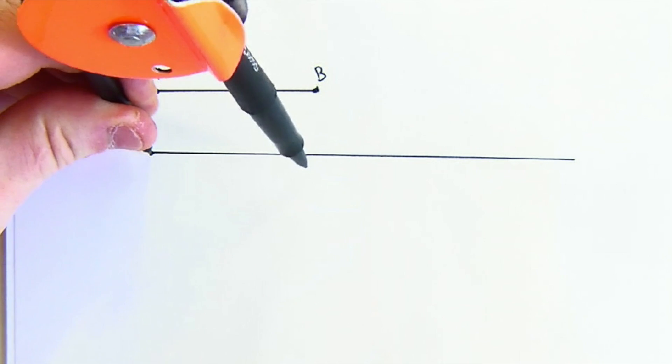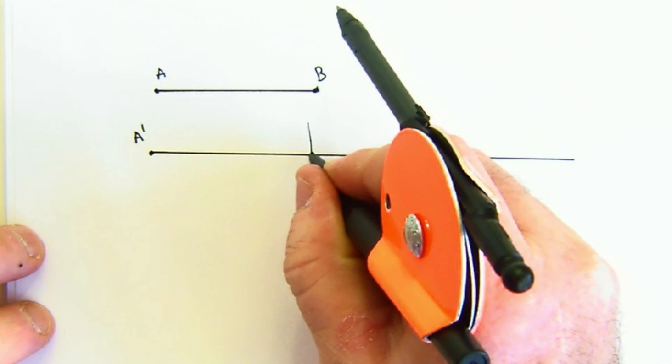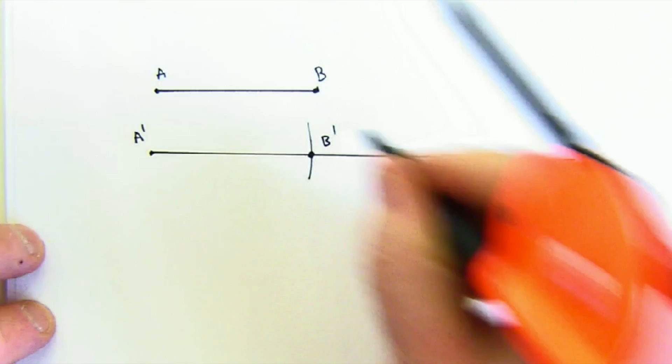And so if I place this at A prime and make a little arc, I get B prime. So this is how we copy segments - a very easy task.